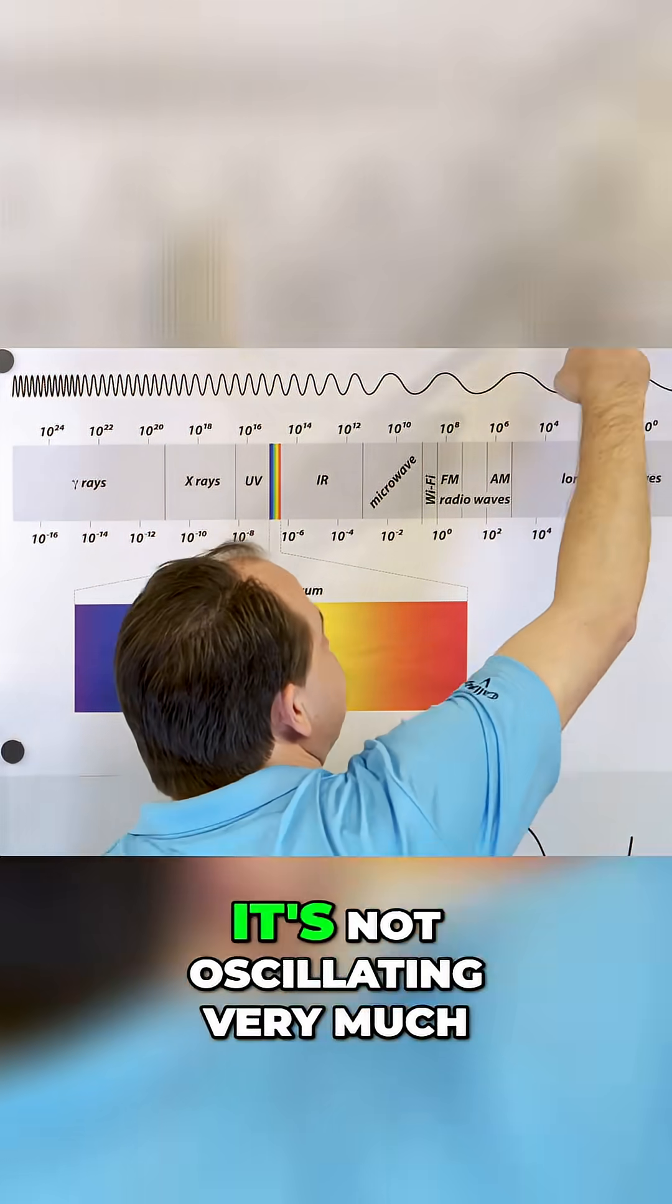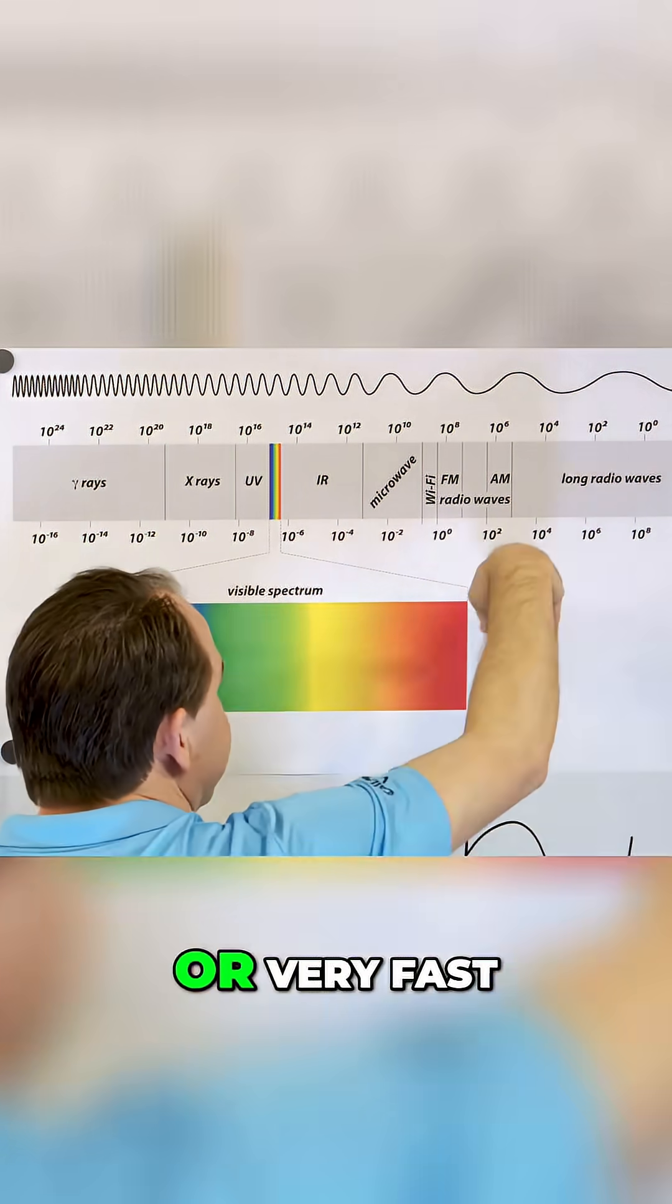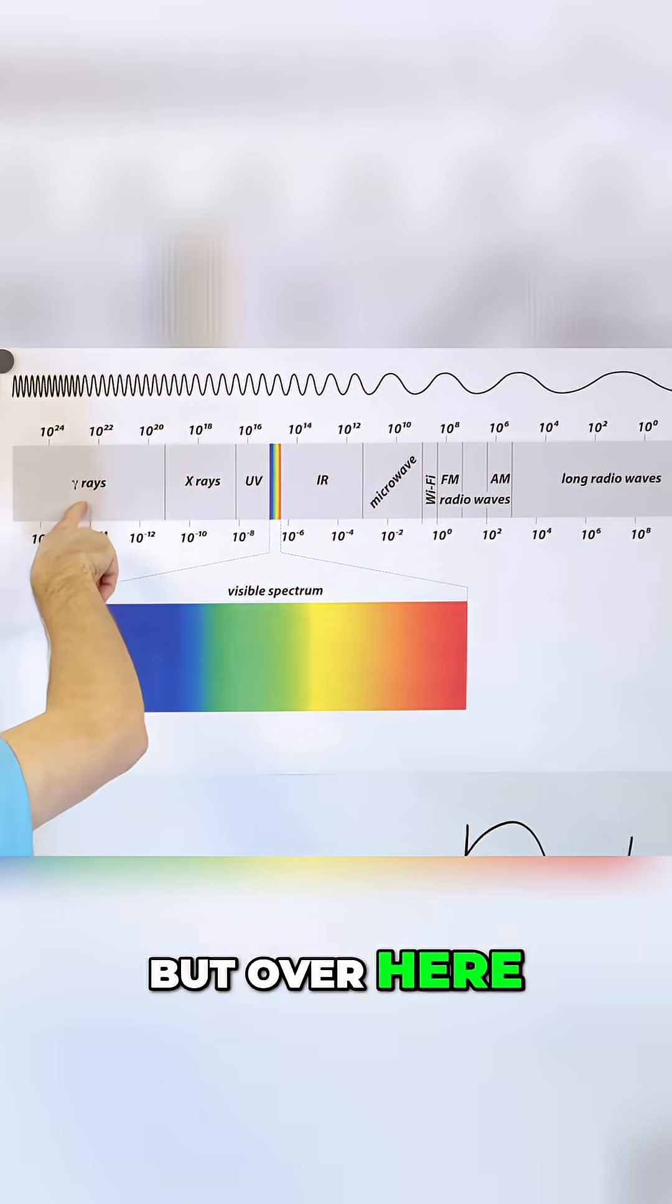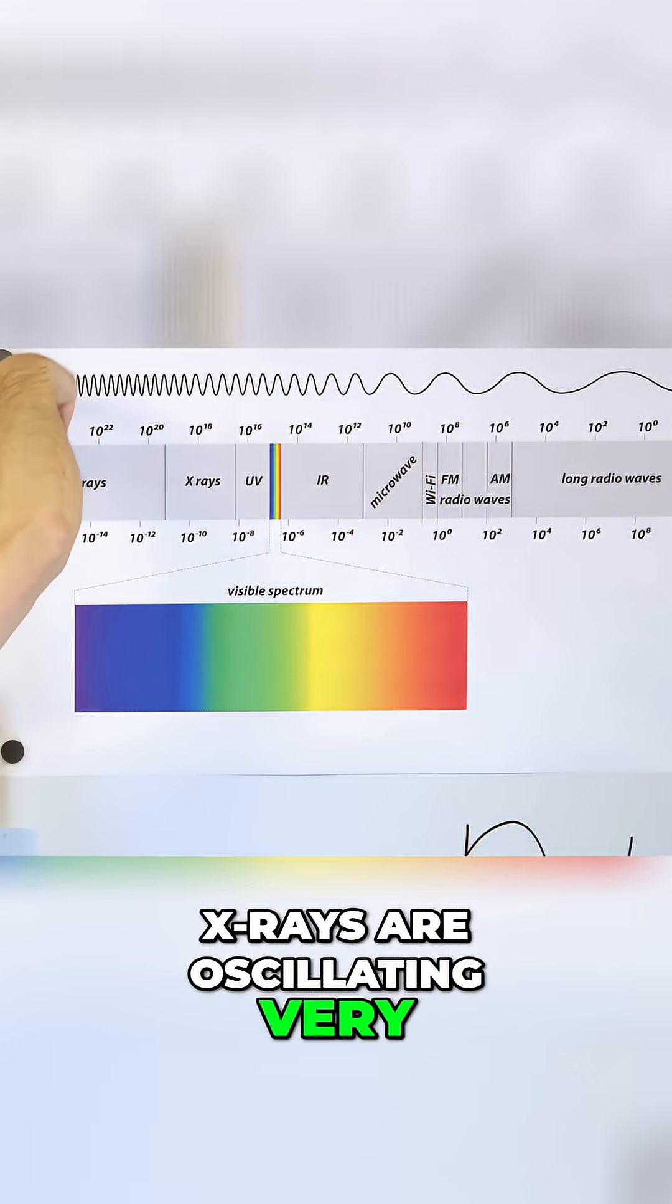And you can see over here it's not oscillating very much, or very fast so to speak. But over here, these gamma rays and x-rays are oscillating very, very fast.